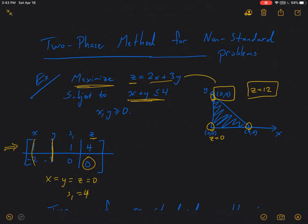So that tells me that x equals y equals z equals 0 and S1 equals 4. That's what I read from the initial simplex tableau. But notice that x equals y equals z equals 0, that corresponds to this bottom corner in the feasible region. So it's telling me the x, y, and z values for that bottom left corner in the feasible region.